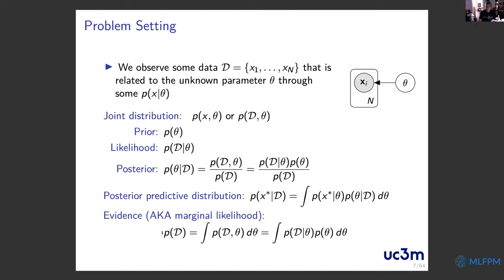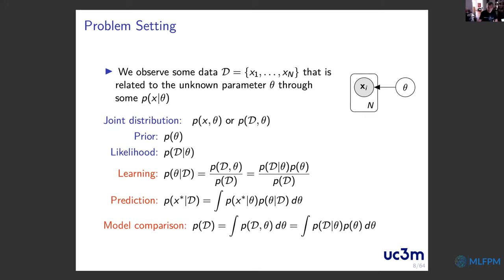Translating this into a machine learning problem: obtaining the posterior distribution of the unknown parameter is the learning problem. The predictive distribution addresses the prediction task. The evidence helps with model comparison — if you compute the evidence for different models, the model that gives the highest evidence is the one that best fits your data.